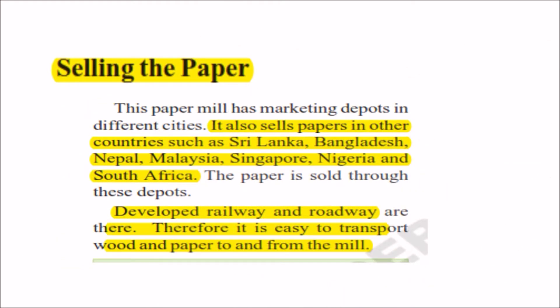Where is our paper sold? The paper is sold in countries like Sri Lanka, Bangladesh, Nepal, Malaysia, Singapore, Nigeria, and South Africa. This is possible because the railway network and roadways have developed greatly, making the transport of wood and paper to and from the mill very easy, allowing export to other countries in Asia and Africa.